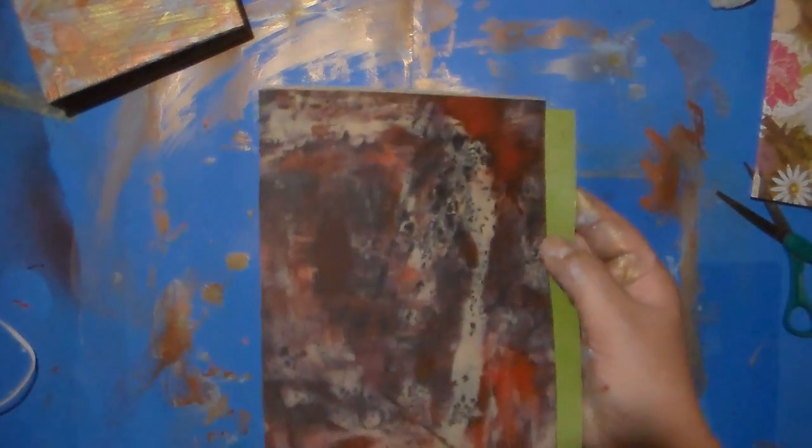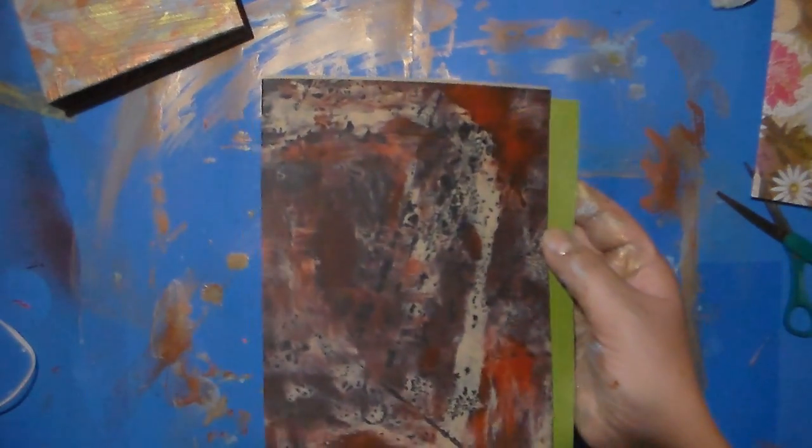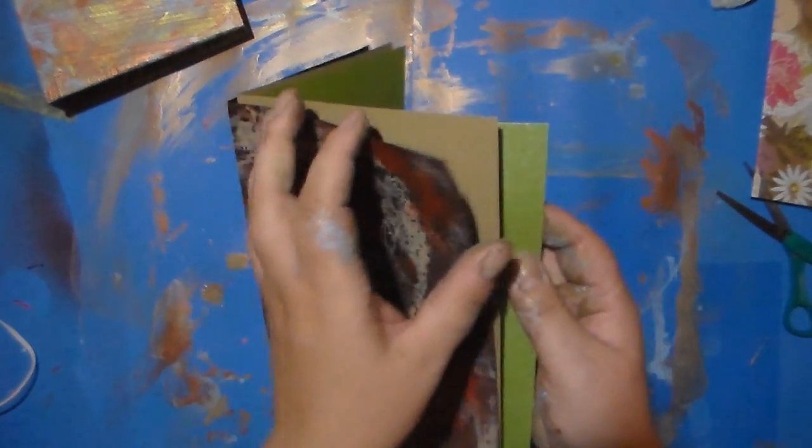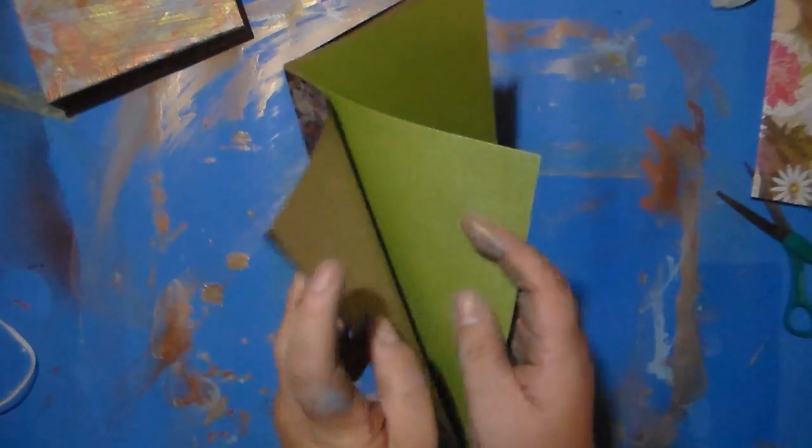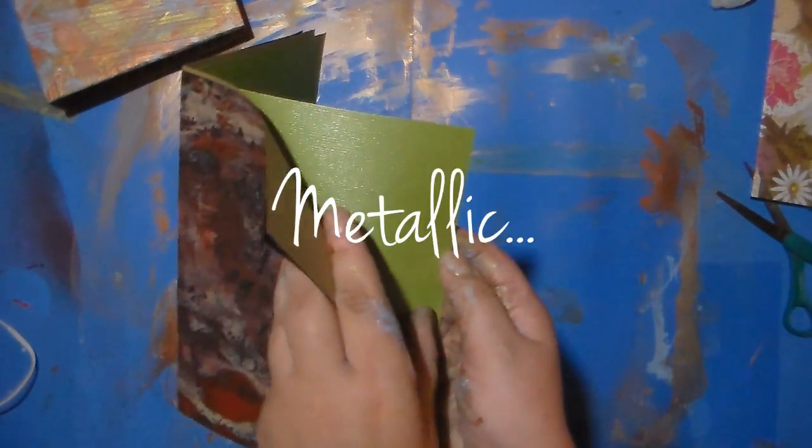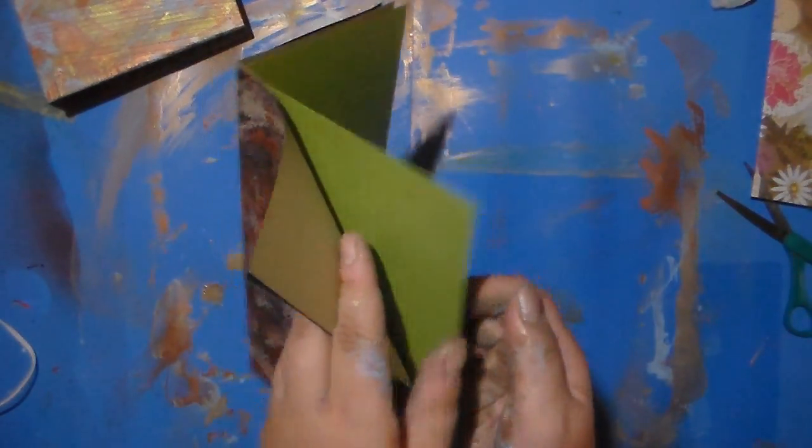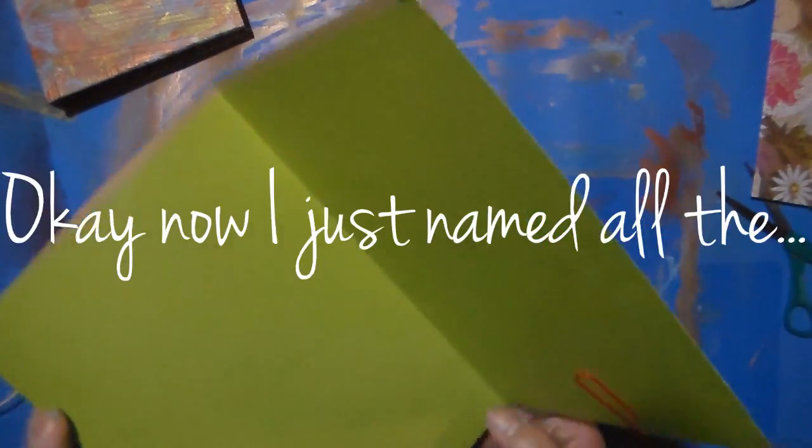As you can see, they're various thicknesses. This one is an acrylic monoprint or a jelly plate print I did. Brown, very thin paper, kind of a shimmery metallic pearly iridescent. Okay, now I just named all the...